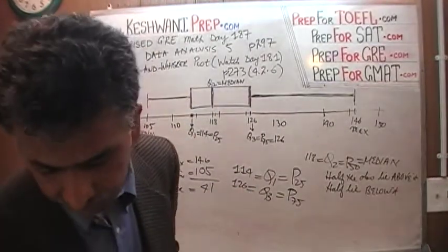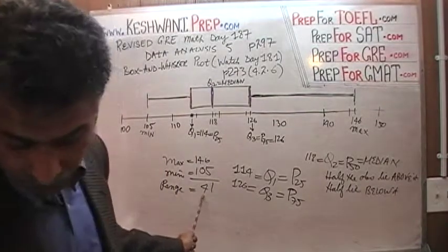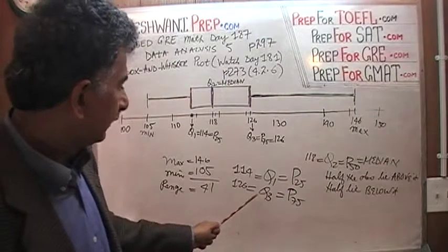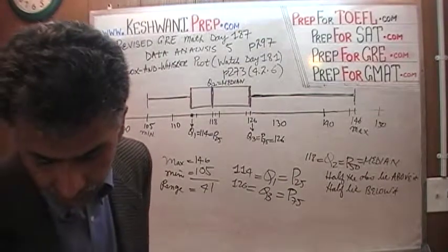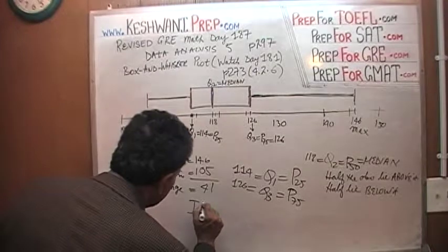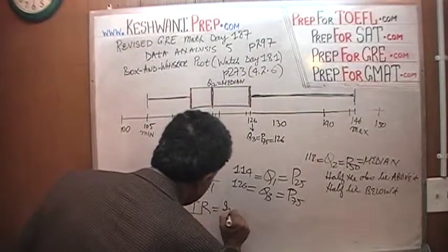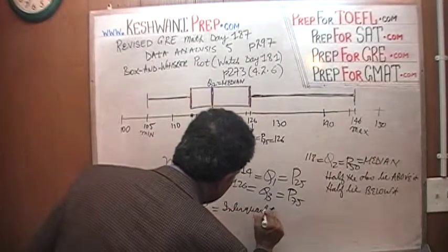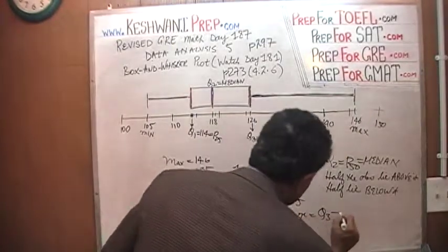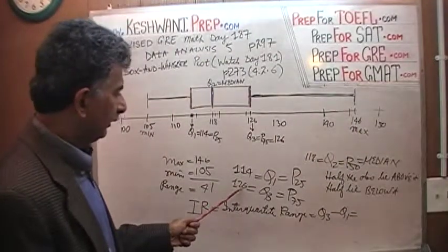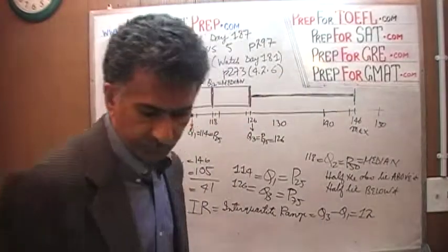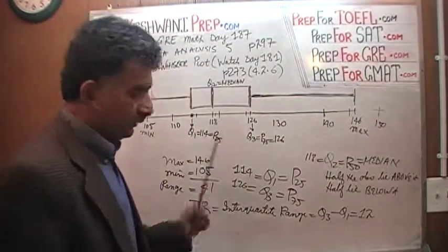Let's confirm part A: the range is 41. The three quartiles are Q1 = 114, Q2 = 118, Q3 = 126. The interquartile range is the difference between the third quartile and the first quartile: 126 minus 114 equals 12. So the interquartile range is 12. That's the end of part A.